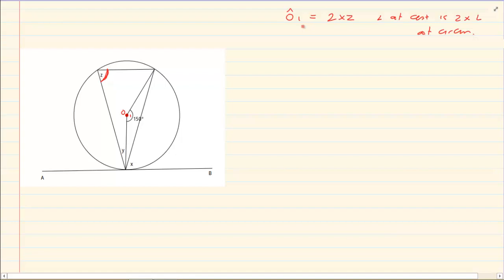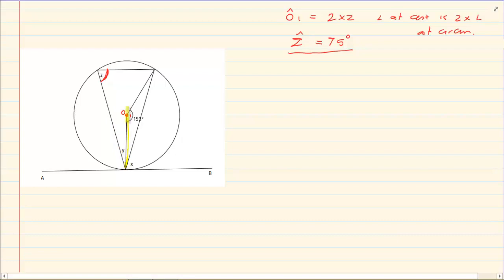Now let's go to the circumference. The angle at the centre using the same points will be equal to 75 degrees. Can you see the angle at the centre? Here is the angle at the centre, and using the same points I am going to the circumference.